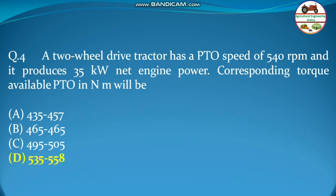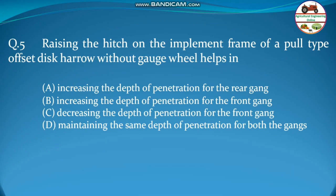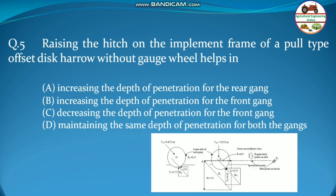Next question: raising the hitch on the implement frame of a full-type offset disc harrow without gauge wheel helps in — (a) increasing depth of penetration for the rear gang, (b) increasing depth for the front gang, (c) decreasing depth for the front gang, or (d) maintaining the same depth. For an offset disc harrow without a gauge wheel, vertical reaction forces define depth. When hitch height is increased, the soil reaction force center shifts toward the front gang, so the front gang penetrates more.